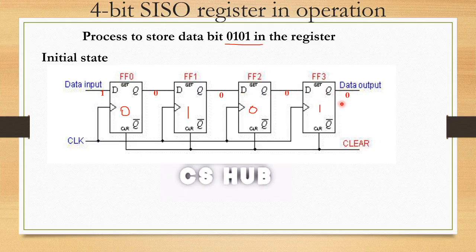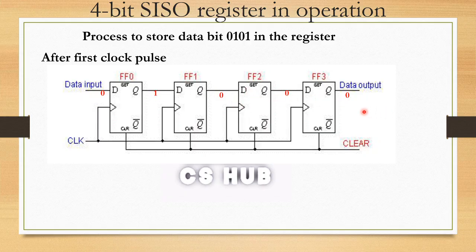Initial state: all flip-flop outputs are 0. After the first clock pulse, the data input is 1, which means the Q output of the first flip-flop becomes 1. Everything else remains 0. The data propagates: the input to the second flip-flop is 0 at this point.